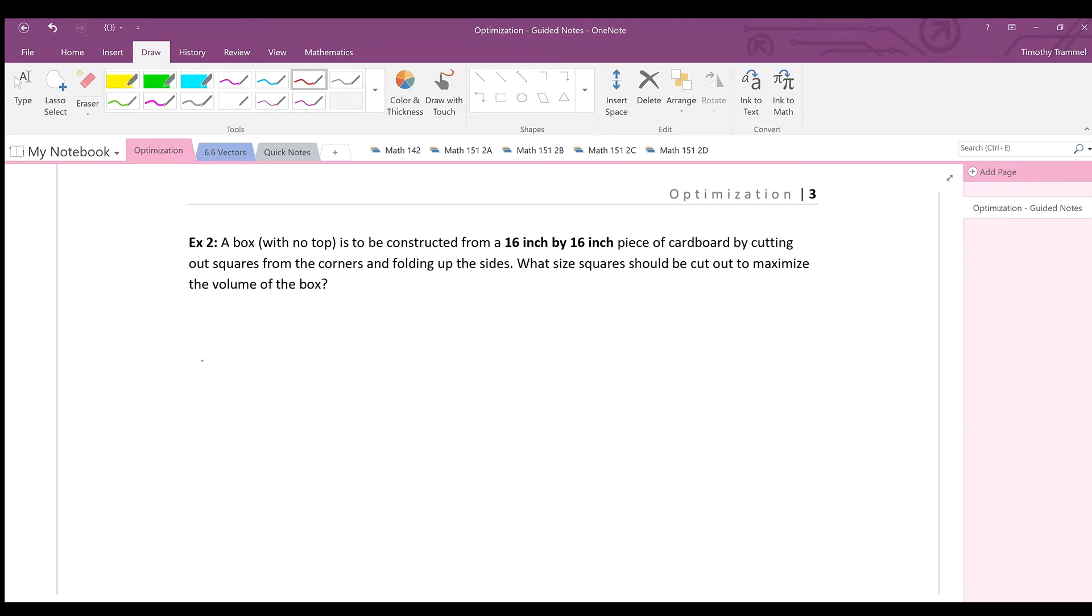Example 2: A box with no top is to be constructed from a 16 inch by 16 inch piece of cardboard by cutting out squares from the corners and folding up the sides. What size squares should be cut out to minimize the volume of the box?